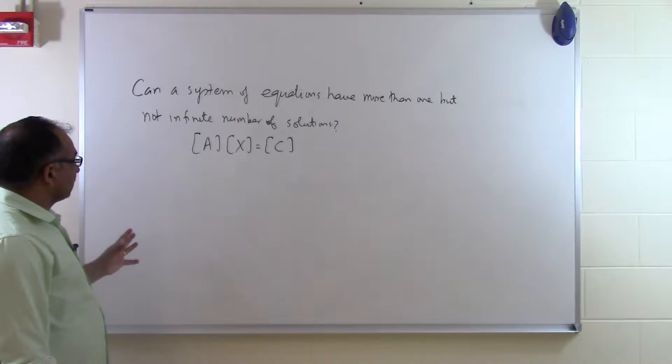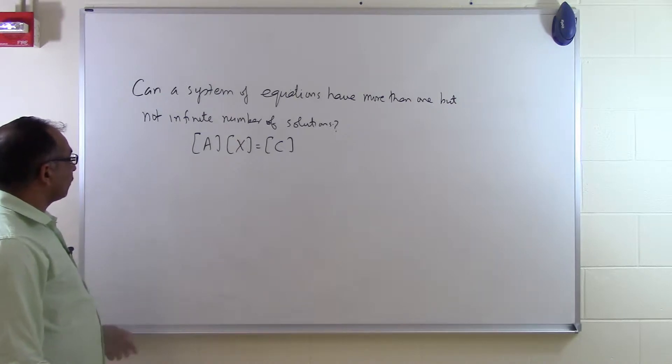We cannot say that it has only five solutions or six solutions or seven solutions. We cannot choose a number which is finite other than one. So let's see for a consistent system of equations, how do we prove that we cannot have just a finite number of solutions greater than one.